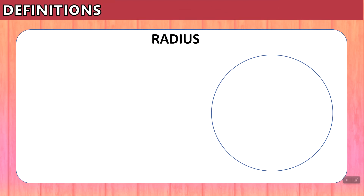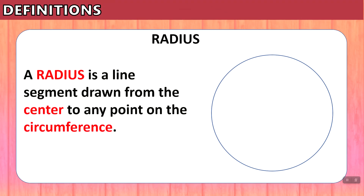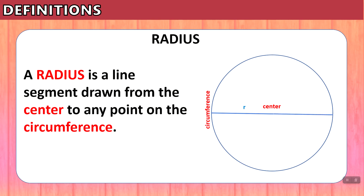In the last video, we saw that a radius is defined as a line segment drawn from the center to any point on the circumference. We denote radius by the letter R, and it starts at the center and goes all the way to the circumference. If we draw another line from the center toward the circumference on the other side, this also is a radius.